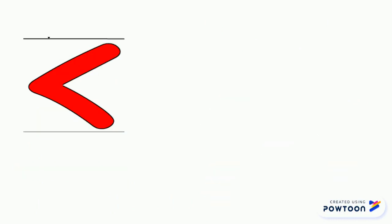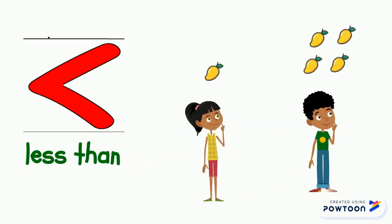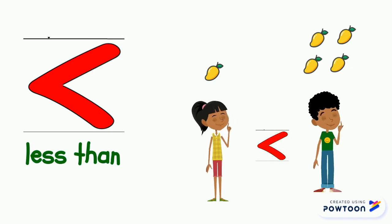This is the less than sign. When a number is less than, it is smaller than another number. It doesn't have as many. Look, Mary doesn't have as many mangoes as John. She has less than.